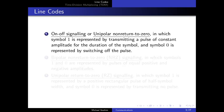The first type of line code is called on-off signaling or unipolar non-return to zero (NRZ). In this type, a symbol one is represented by transmitting a pulse of constant amplitude for the entire duration of the symbol, and a symbol zero is represented by switching off the pulse — no pulse is being transmitted.